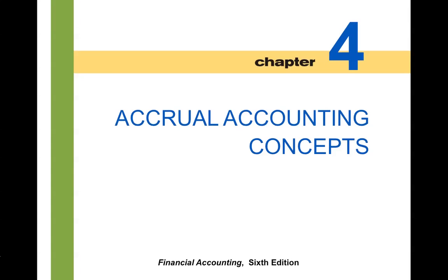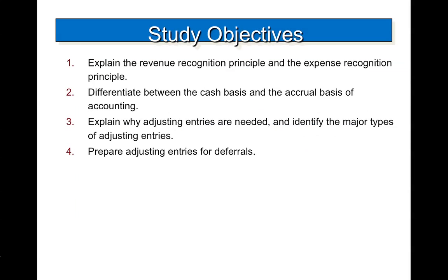Hello Accounting 201 students. We are ready to begin chapter four. This is another chapter that is very important — we need to understand how to do the adjusting entries and the closing entries. In this PowerPoint we are going to explain the revenue recognition principle and the expense recognition principle, differentiate between the cash basis and the accrual basis of accounting, explain why adjusting entries are needed, identify the major types of adjusting entries, and prepare adjusting entries for deferrals.